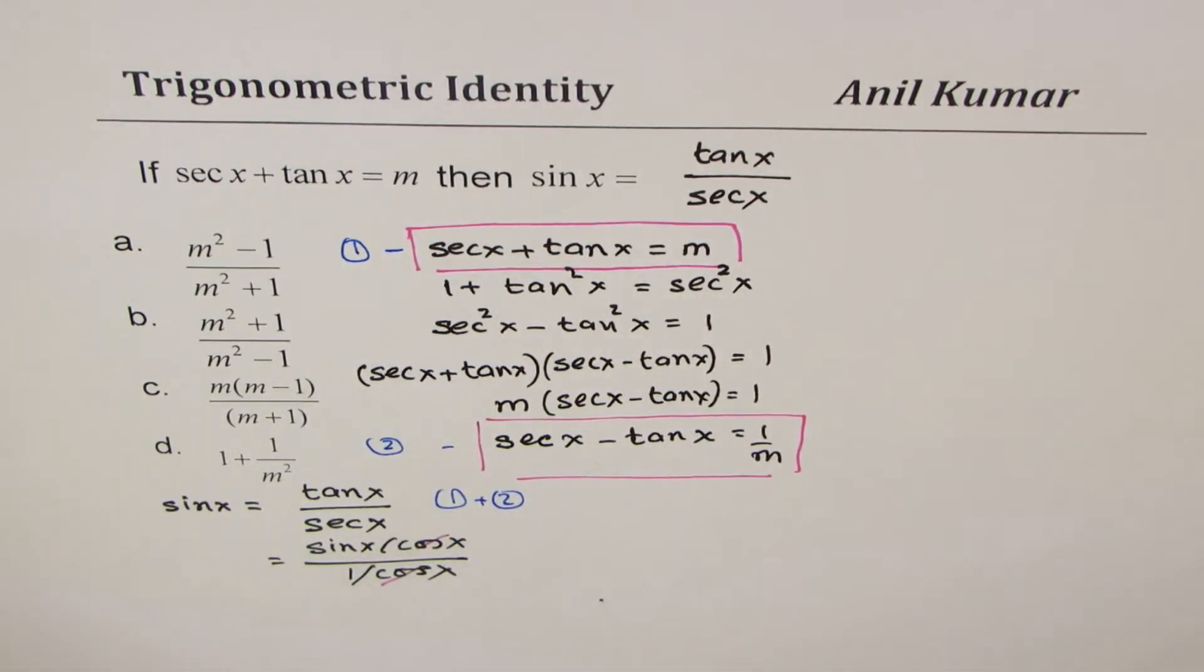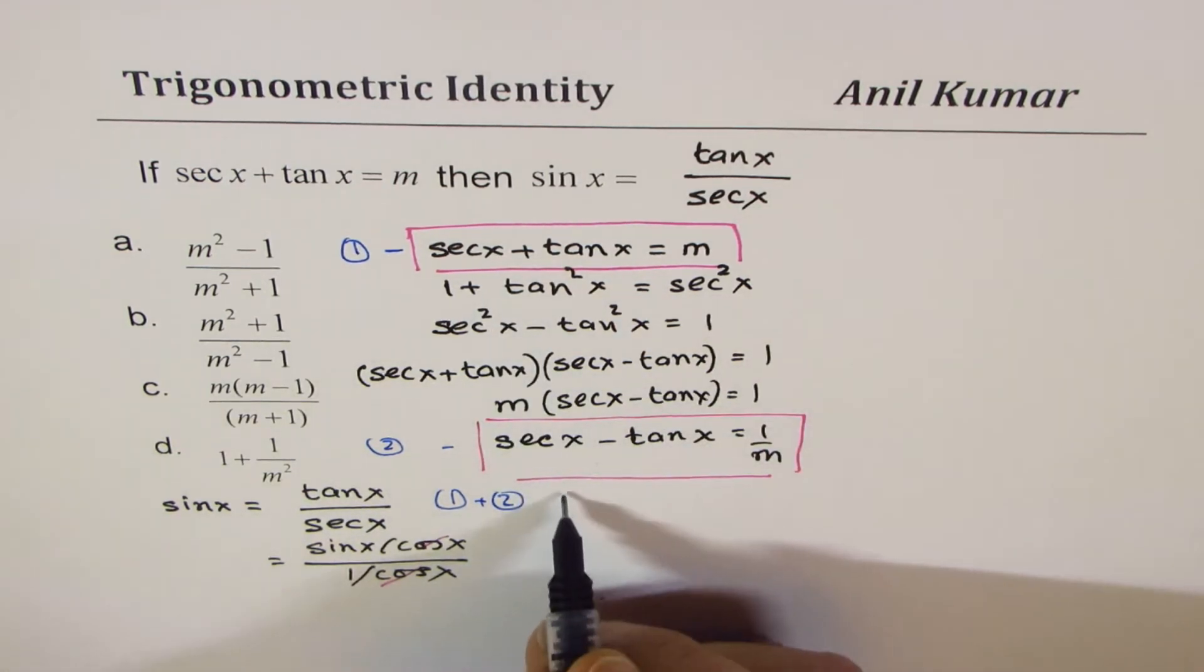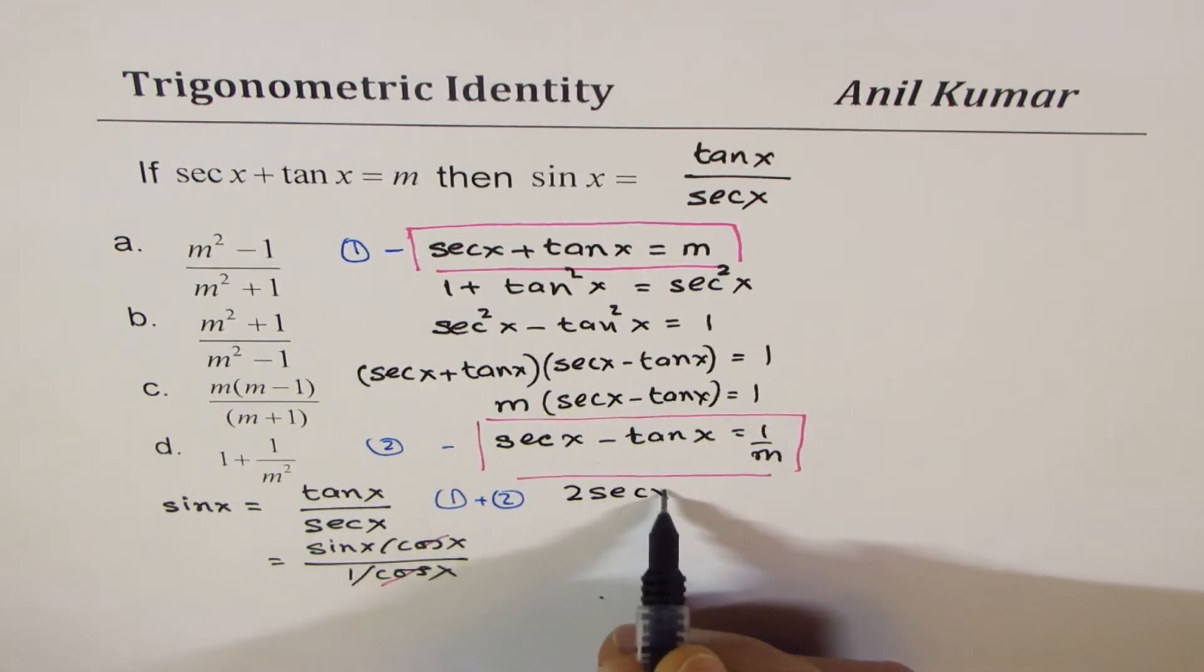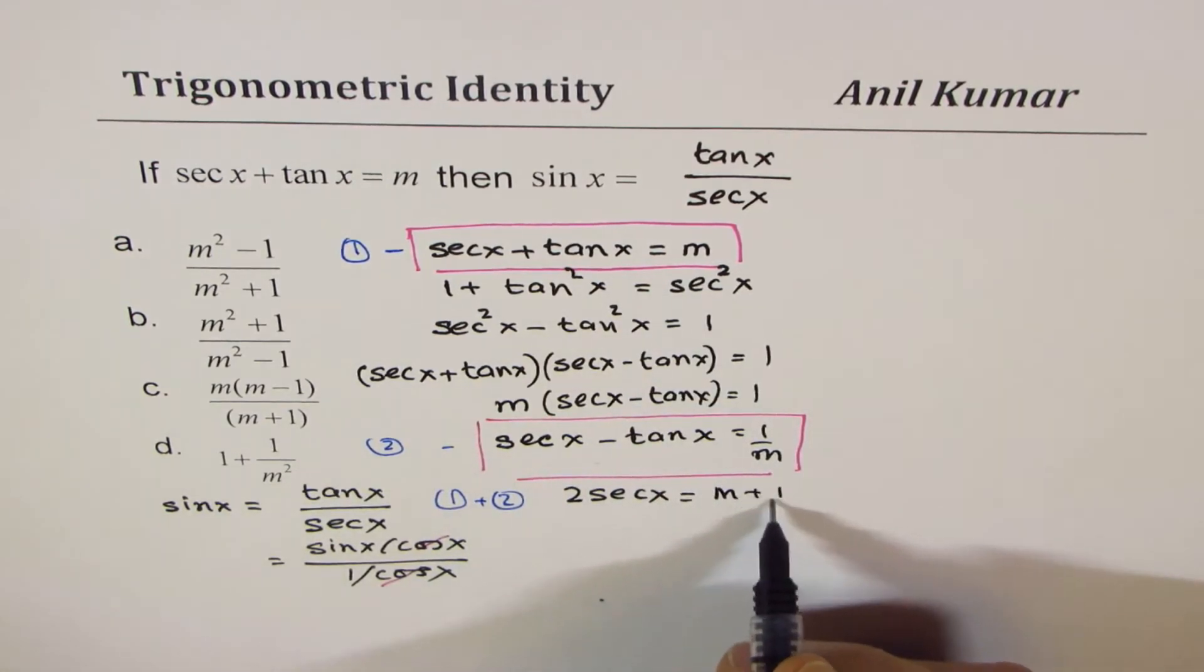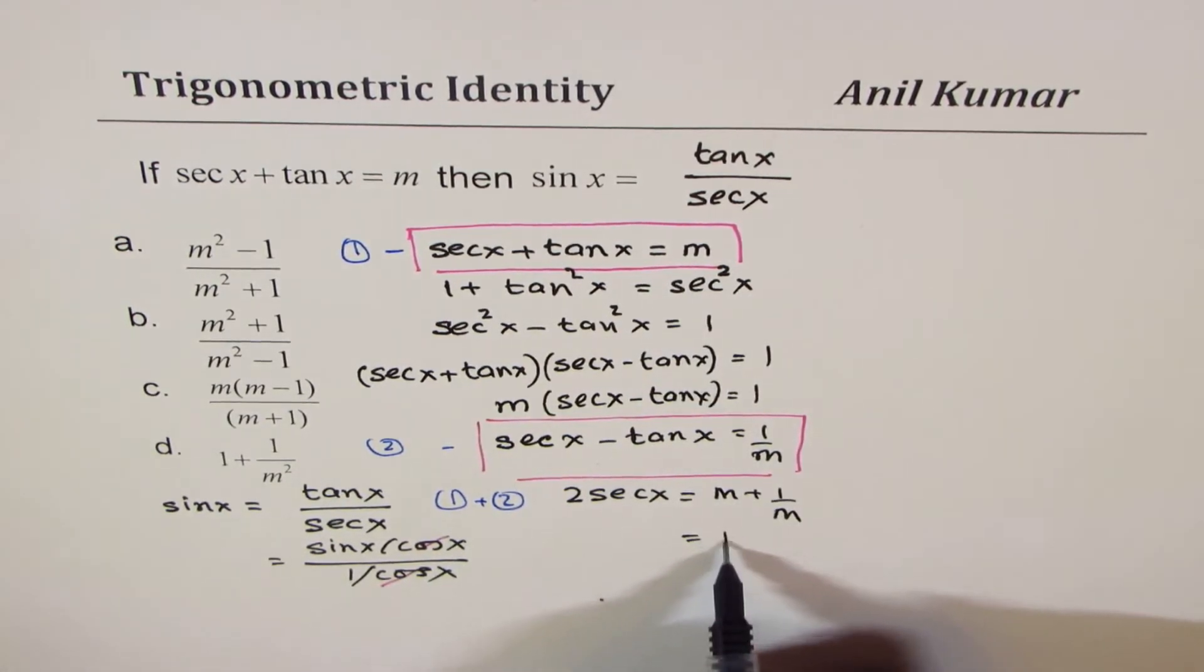If I add, I get 2 secant x equals to m plus 1 over m or m square plus 1 over m, perfect? Okay.